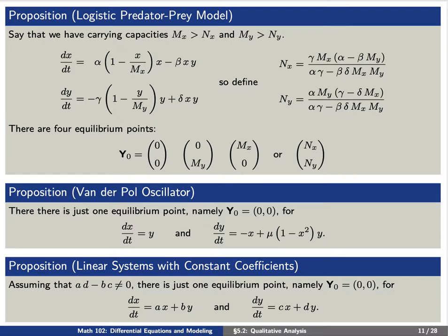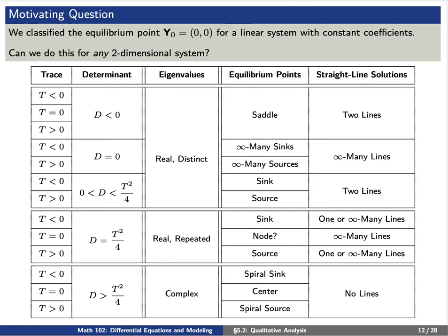More generally, if we're given a linear system with constant coefficients, then we can classify all of the equilibrium points. We did so using the table that you see here on your screen. The idea is that the equilibrium points will either be saddles, sinks, sources, spiral sinks, centers, or spiral sources.